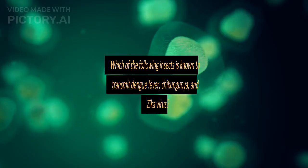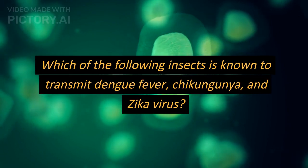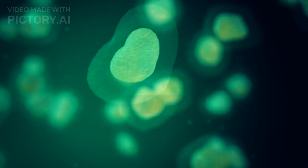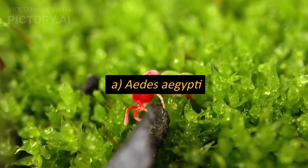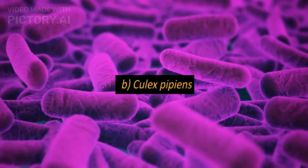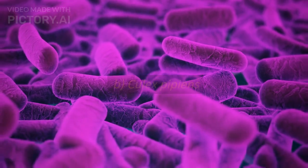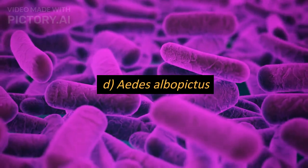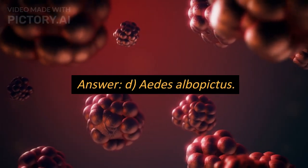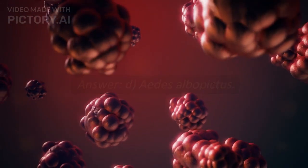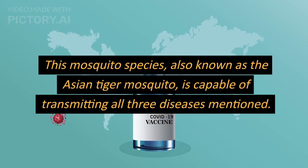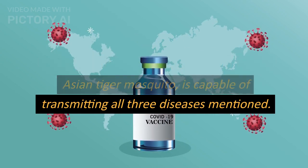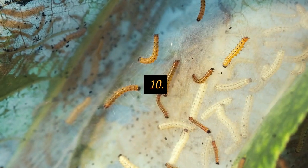Question 9: Which of the following insects is known to transmit dengue fever, chikungunya, and Zika virus? a. Aedes aegypti, b. Culex pipiens, c. Anopheles gambiae, d. Aedes albopictus. Answer: d. Aedes albopictus. This mosquito species, also known as the Asian tiger mosquito, is capable of transmitting all three diseases mentioned.